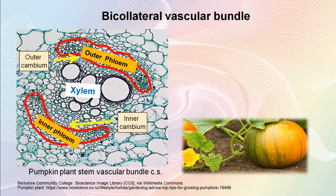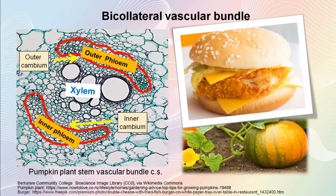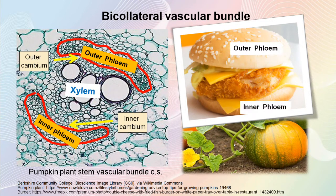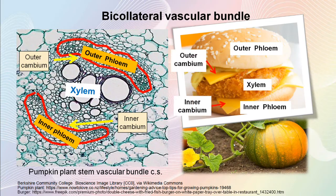To make it easier to remember, let's compare it with a delicious double cheeseburger. Here the burger bun represents the phloem groups, the burger patty represents the xylem group, and the two cheese layers represent the cambium layers. So when you have a burger next time, remember our bicollateral vascular bundle.